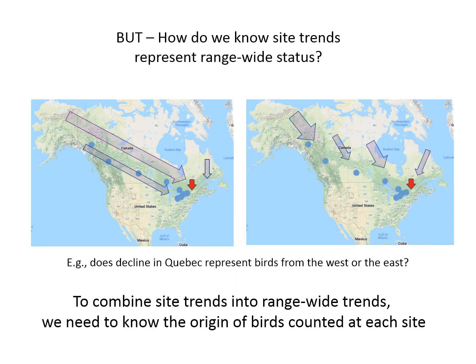One of the difficulties with doing this is that when you put the trends together from individual sites, you have to know which part of the range is being sampled from each site. These two made-up scenarios illustrate what the issue is.